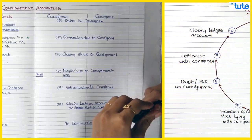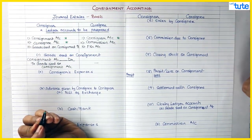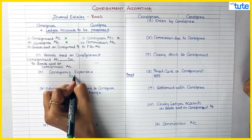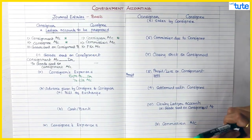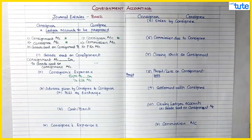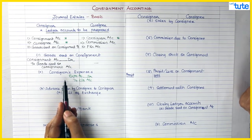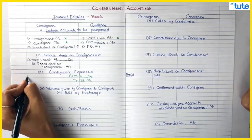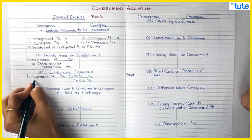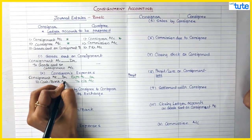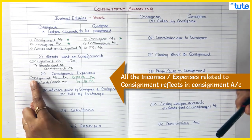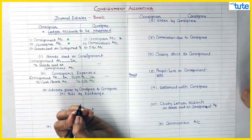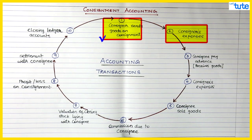Step two: Consigner's expenses. The normal expense entry is Expense Account Debit to Cash/Bank Account. For Consignment, all income and expenses go to Consignment Account. So instead of an expense account, we debit Consignment Account and credit Cash/Bank Account. The payment is done by the Consigner, so Consigner's cash goes out. Instead of opening a new expense account, all income and expenses related to Consignment go to the Consignment nominal account. Consignee will not pass any entry for this because the expenses are done by the Consigner.